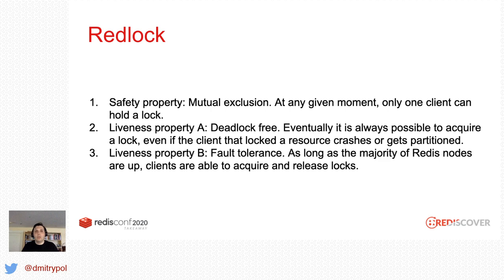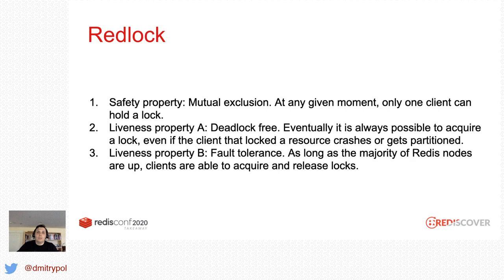This is where distributed lock management comes in. It allows us to run a process on any server, giving us redundancy, but ensures it runs on only one server at a time. That's Redlock property number one: mutual exclusion — at any given time, only one process can run. The second important property is avoiding deadlock: if a process acquires a lock on a shared resource and then crashes before releasing it, none of the other processes will run until we manually intervene. Redis solves this with TTL. Third, we want fault tolerance — we don't want our Redlock mechanism to become a single point of failure in itself.